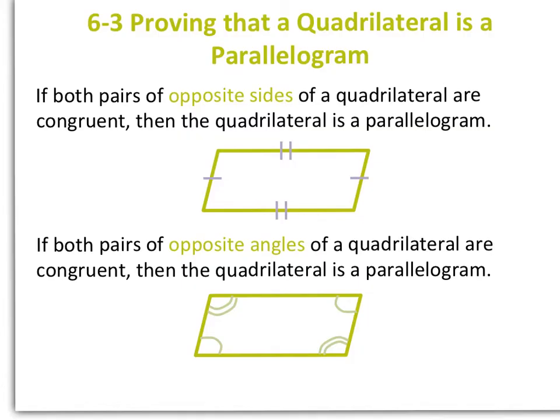If both pairs of opposite angles of a quadrilateral are congruent, then the quadrilateral is a parallelogram.